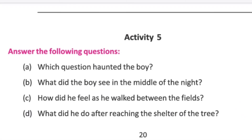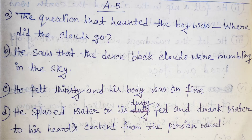Activity 5: Answer the following questions. Question: Which question haunted the boy? Answer: Where did the clouds go? Next question: What did the boy see in the middle of the night? Answer: He saw that dense black clouds were rumbling in the sky.